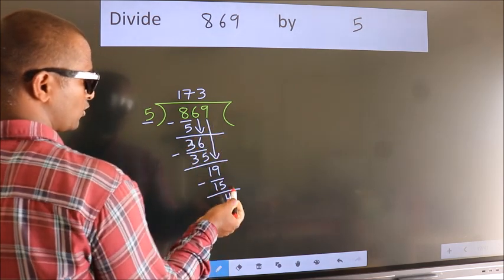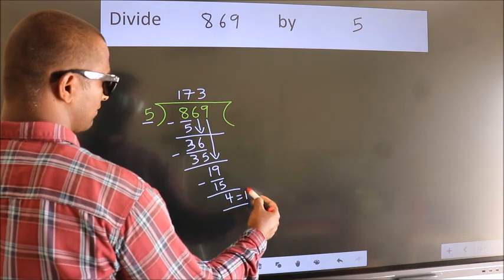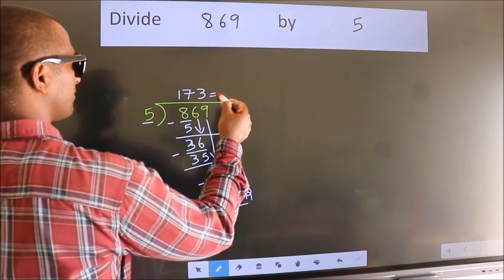No more numbers to bring it down. So we stop here. This is our remainder. This is our quotient.